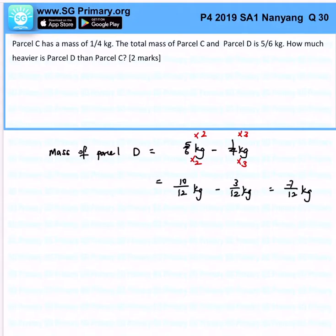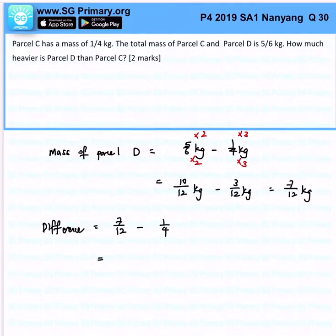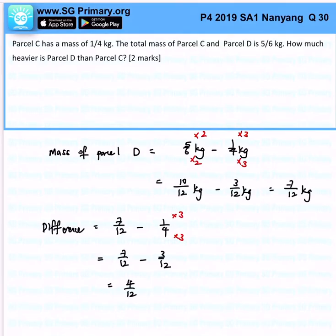Now, how much heavier is Parcel D than Parcel C? The difference would be 7 over 12 minus 1 quarter. The denominators must be the same, so that gives us 7 over 12 minus 3 over 12, which is 4 over 12 kg.